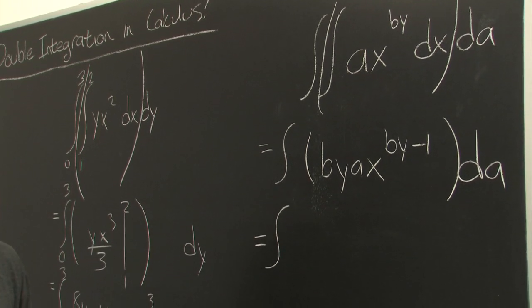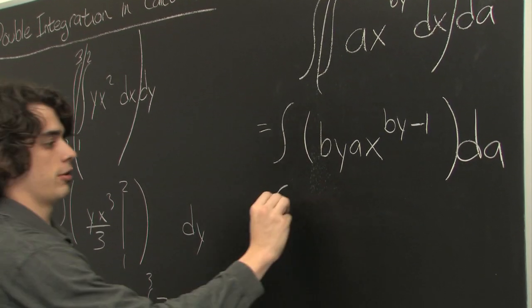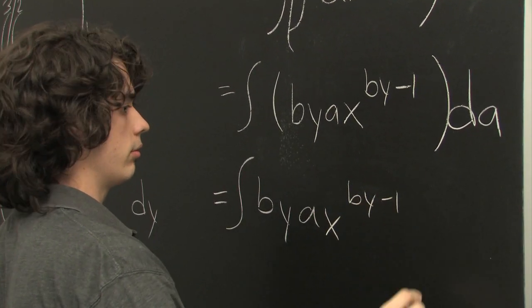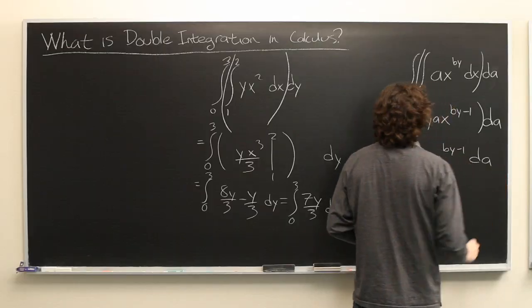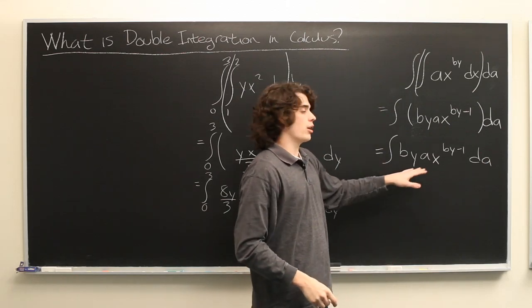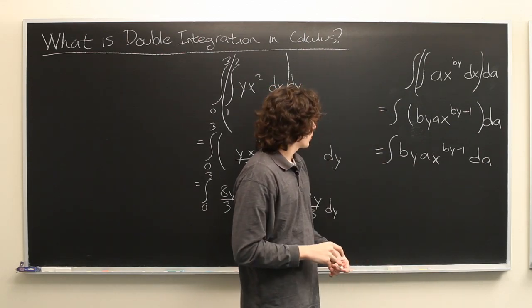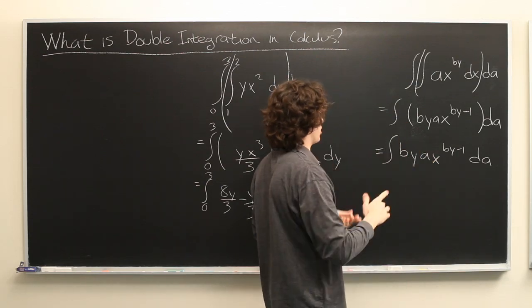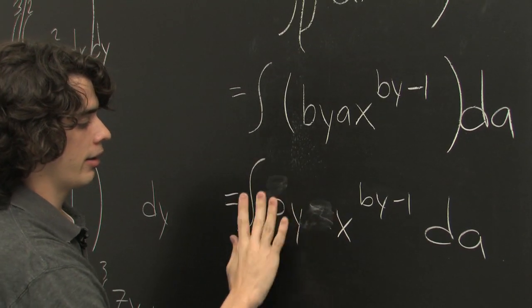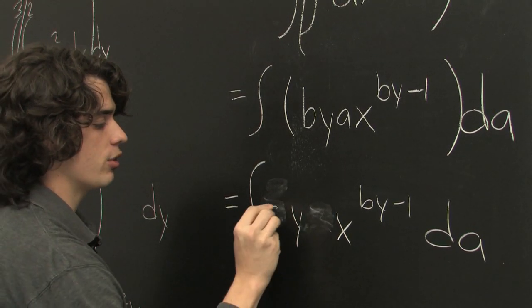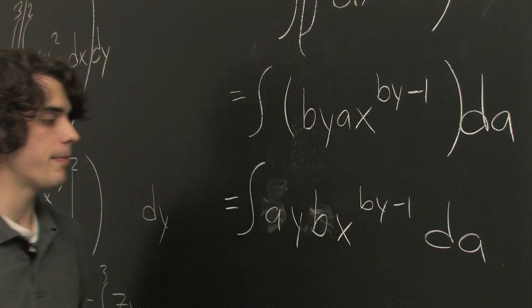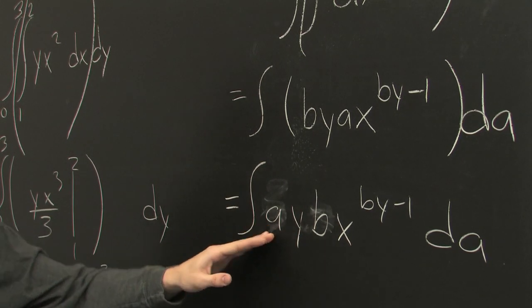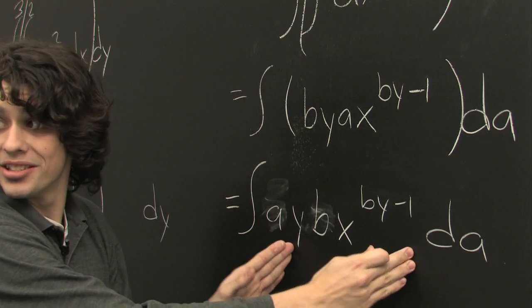Okay. So now we can simply just get rid of the parentheses. And this time we're integrating with respect to a. Now this may seem like a very messy, hard to read formula here, but it may be helpful if we simply switch the a and the b. And you'll see that since a is the variable we're integrating, all this is just a constant.